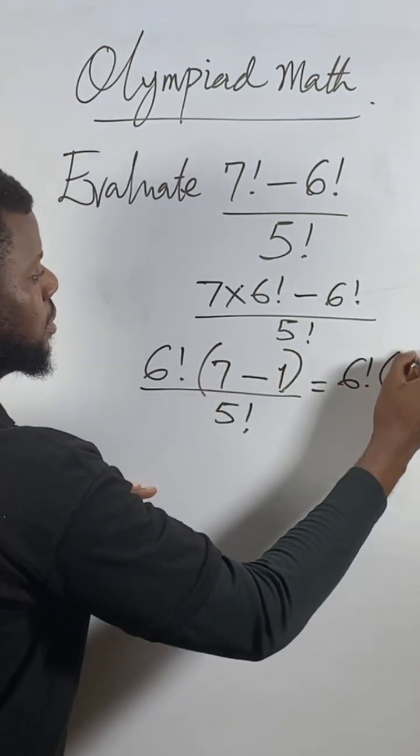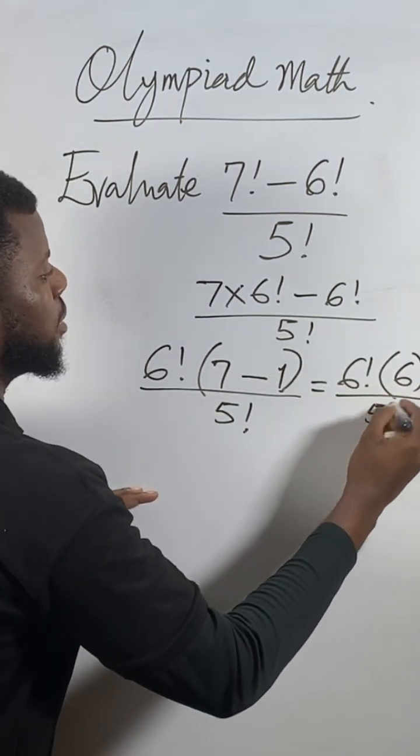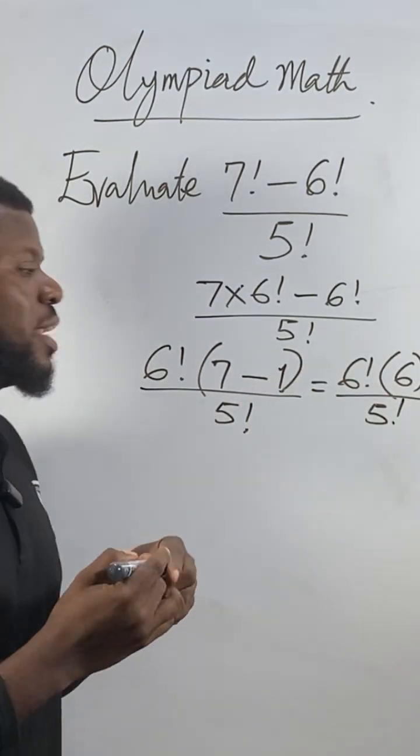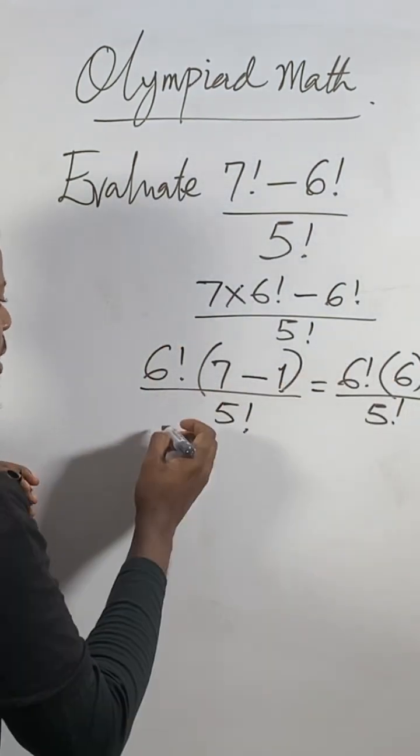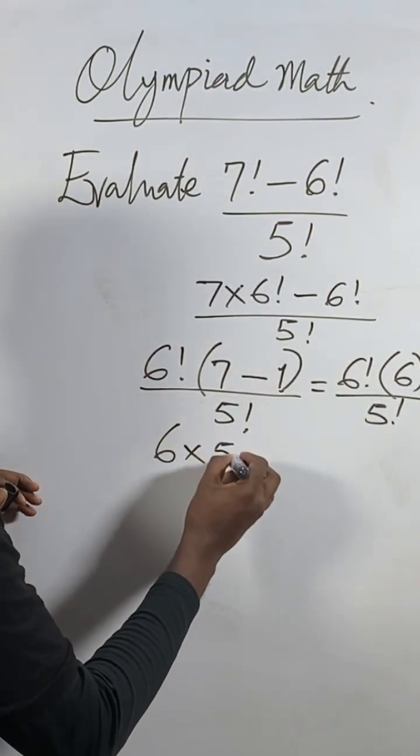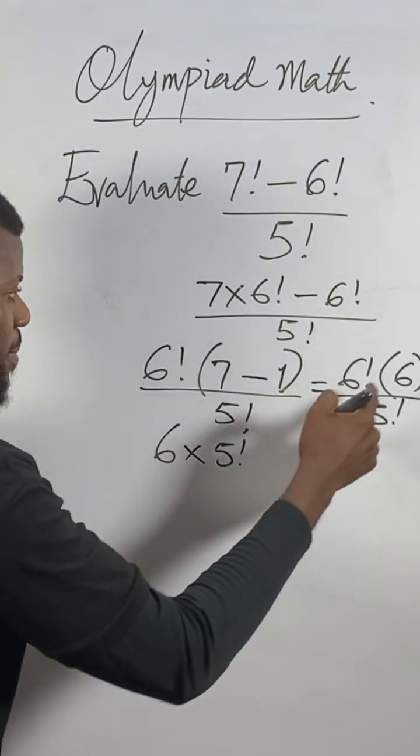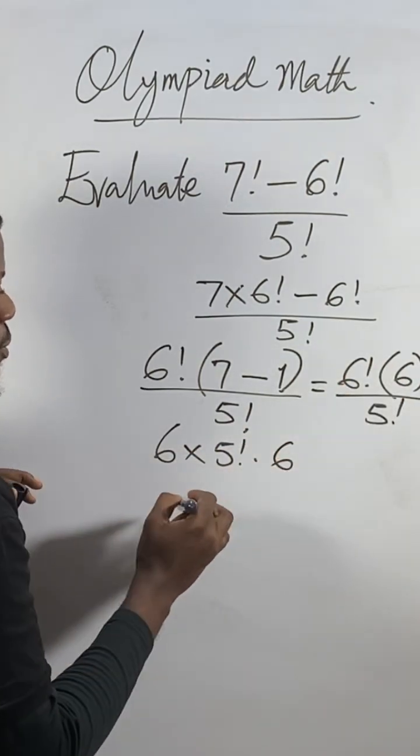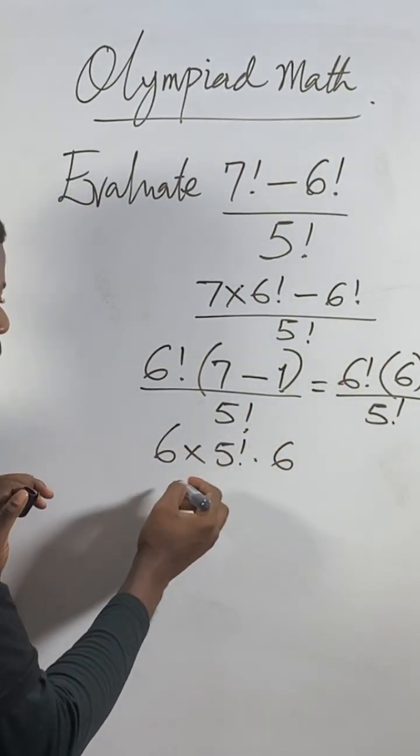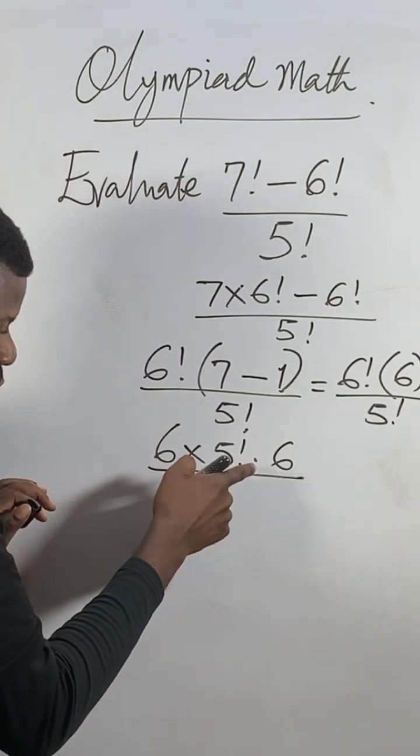You don't need to expand 6 factorial as 6 times 5 times 4. You can do another shortcut: 6 factorial equals 6 times 5 factorial. Remember, we already have this expression times 6.